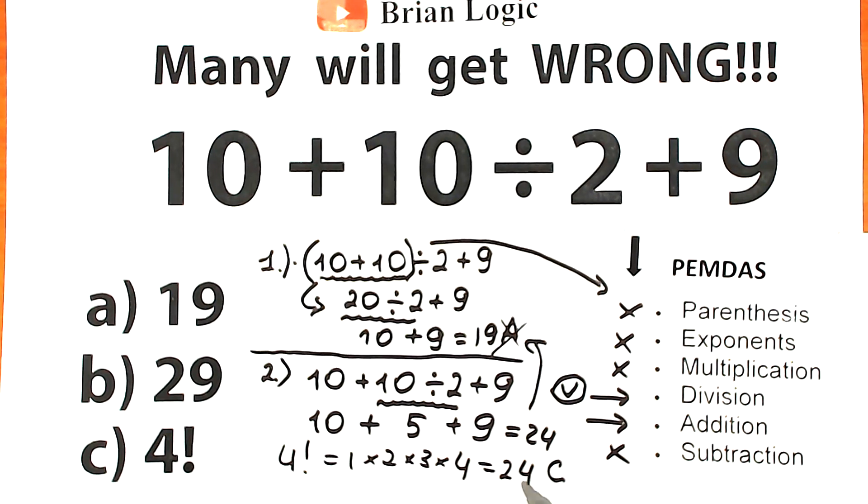And this is option C, because 4 factorial, this is the same as 24. And in the same way, 24 is a correct answer according to PEMDAS order of operation, because division addition is a correct order of operation. Division, then addition from left, in a strict order from left to right.